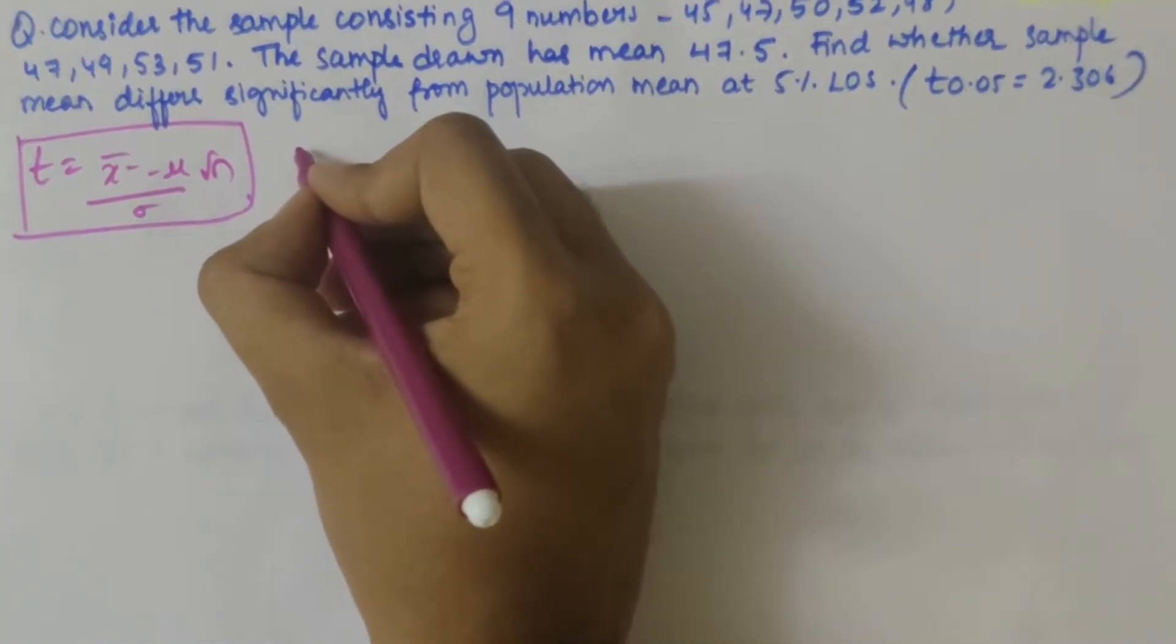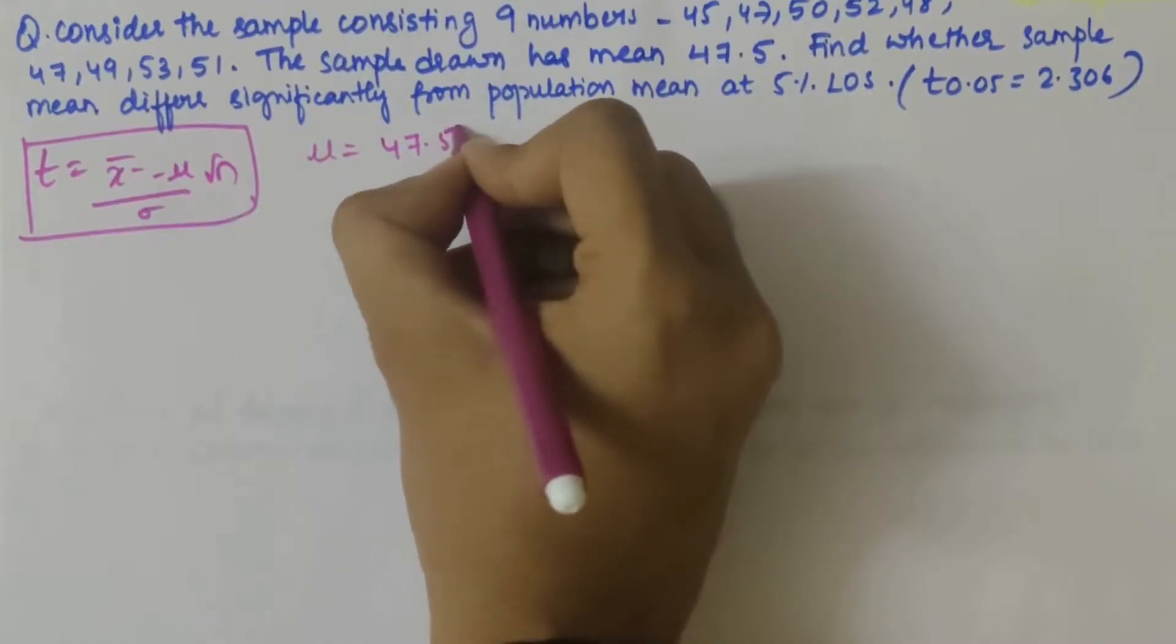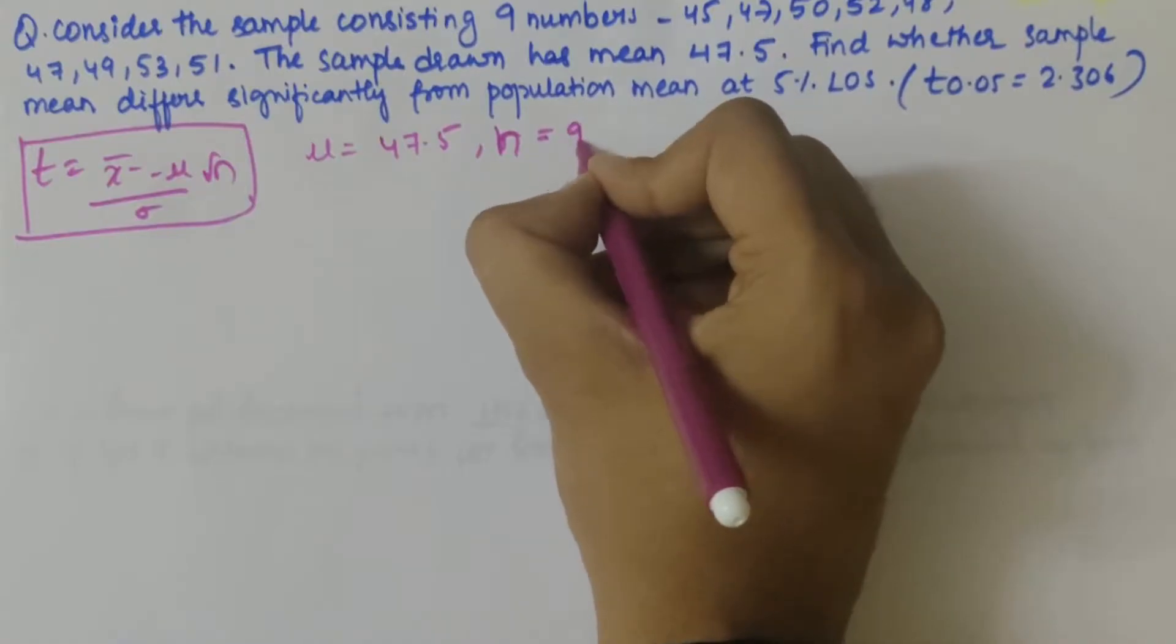From the question, the mu value is given as 47.5 and n value is given as 9.